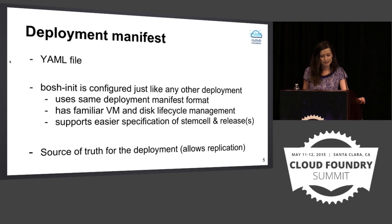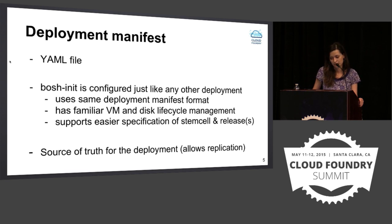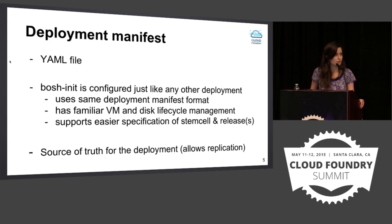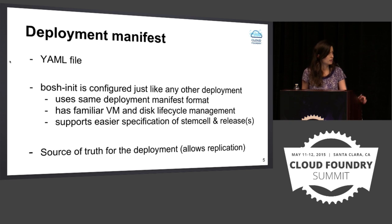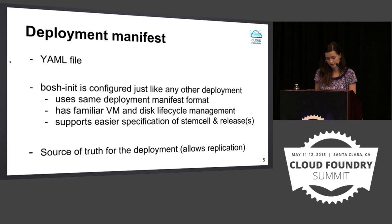Stemcell, release, and deploy manifest are three main components of BOSH that are used to uniquely identify any deployment. Stemcell is an operating system image used by BOSH to create VMs from. Release is software that defines what services are going to run on that VM and what dependencies they need. Deploy manifest is a configuration file. Let's take a look at the deploy manifest - it's a YAML file.